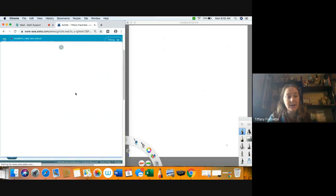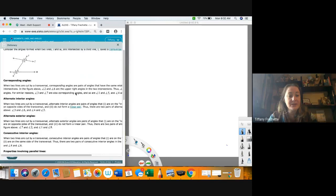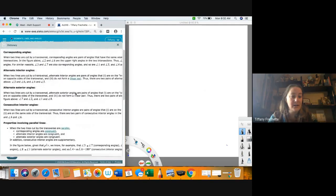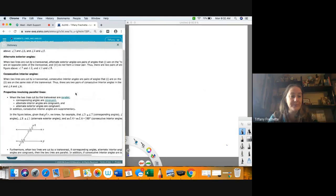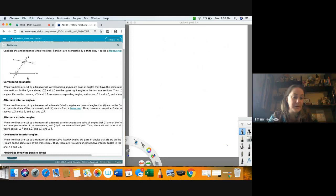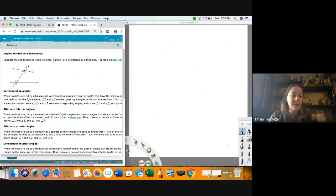So if we click on angles formed, so this actually has quite a few of the definitions that we need in here. It doesn't give us a full diagram of them for each one, but it does have all the definitions in here for alternate interior angles, alternate exterior angles, consecutive interior angles, corresponding angles. These are all things formed when we have two lines and then a transversal crossing them.